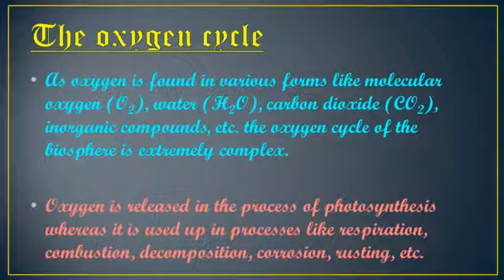Oxygen is released during photosynthesis — plants absorb carbon dioxide and release oxygen. That oxygen is then inhaled by humans or animals in the process of respiration. Combustion means burning, and oxygen helps in burning. Decomposition, corrosion — where metals react with oxygen and get damaged — and rusting are other processes that use up oxygen.